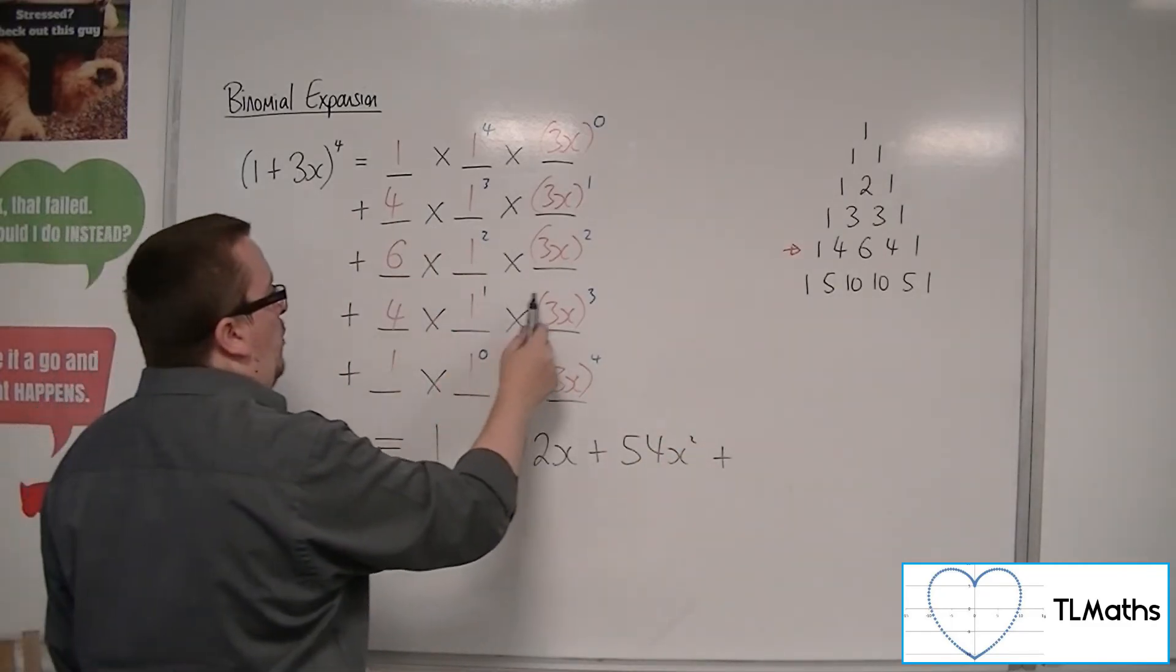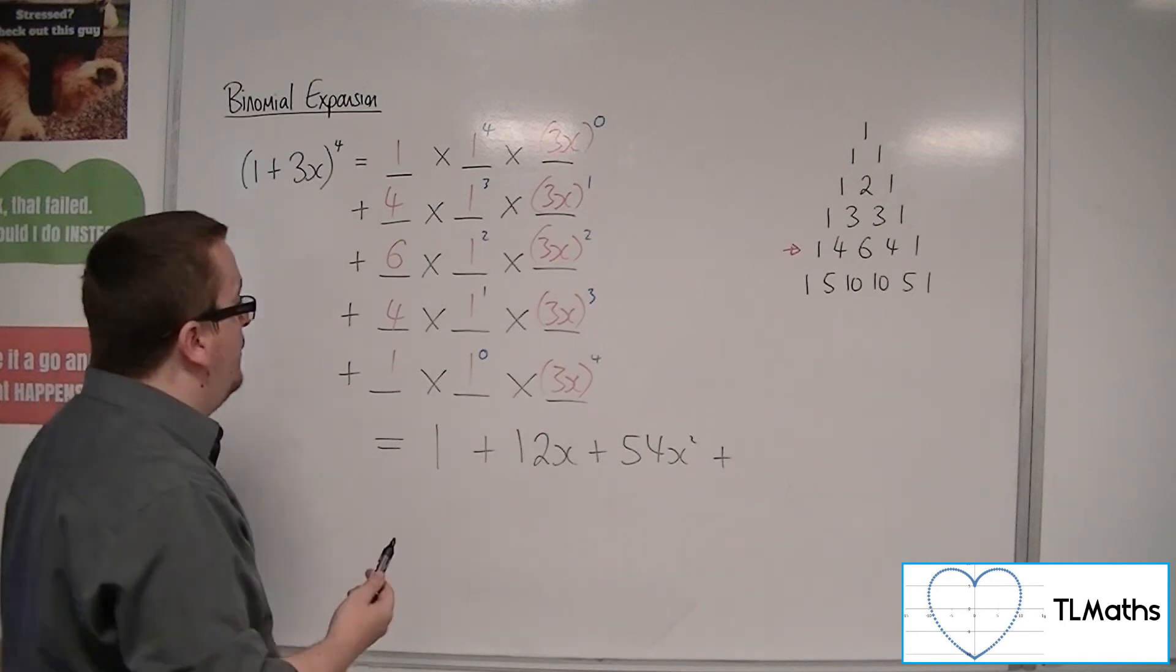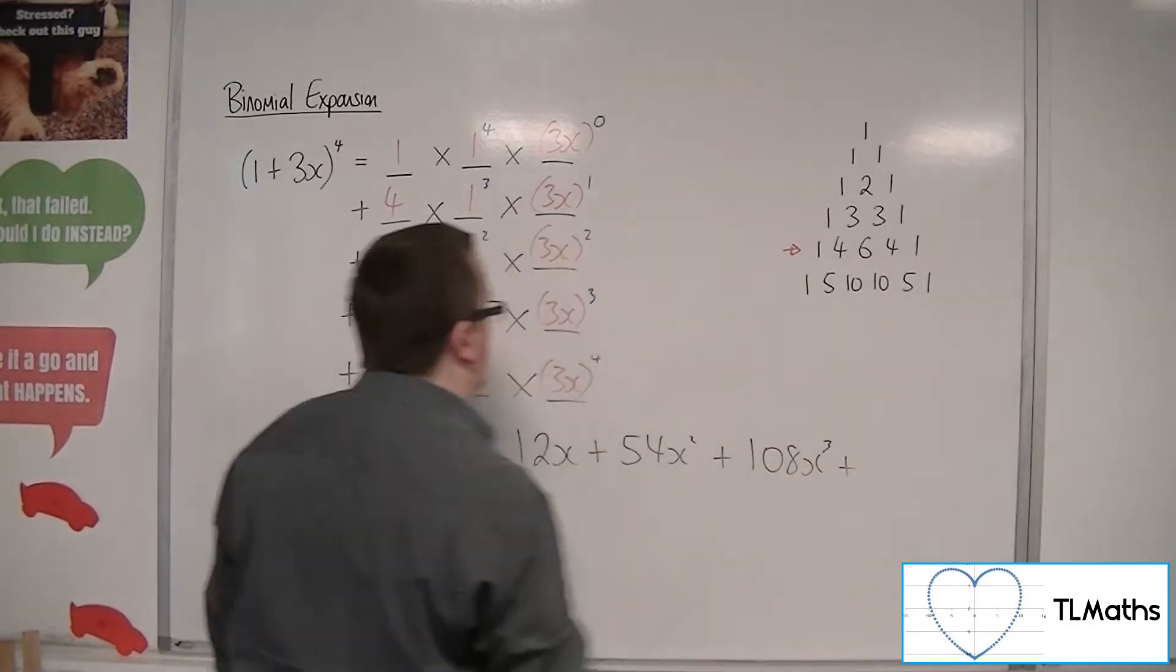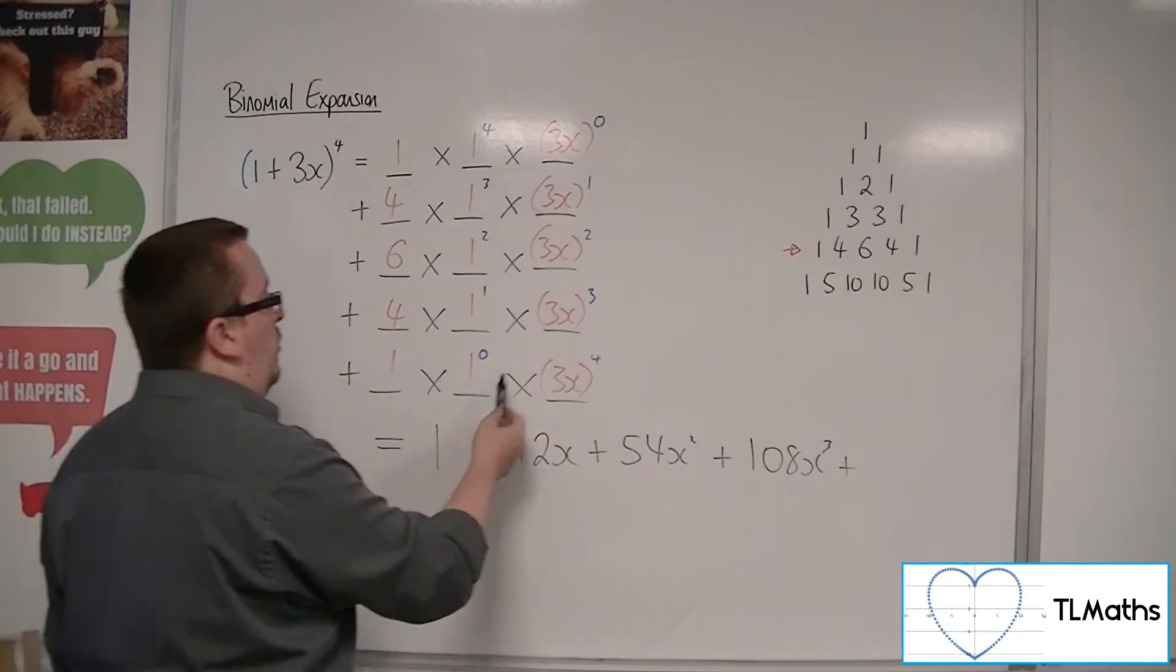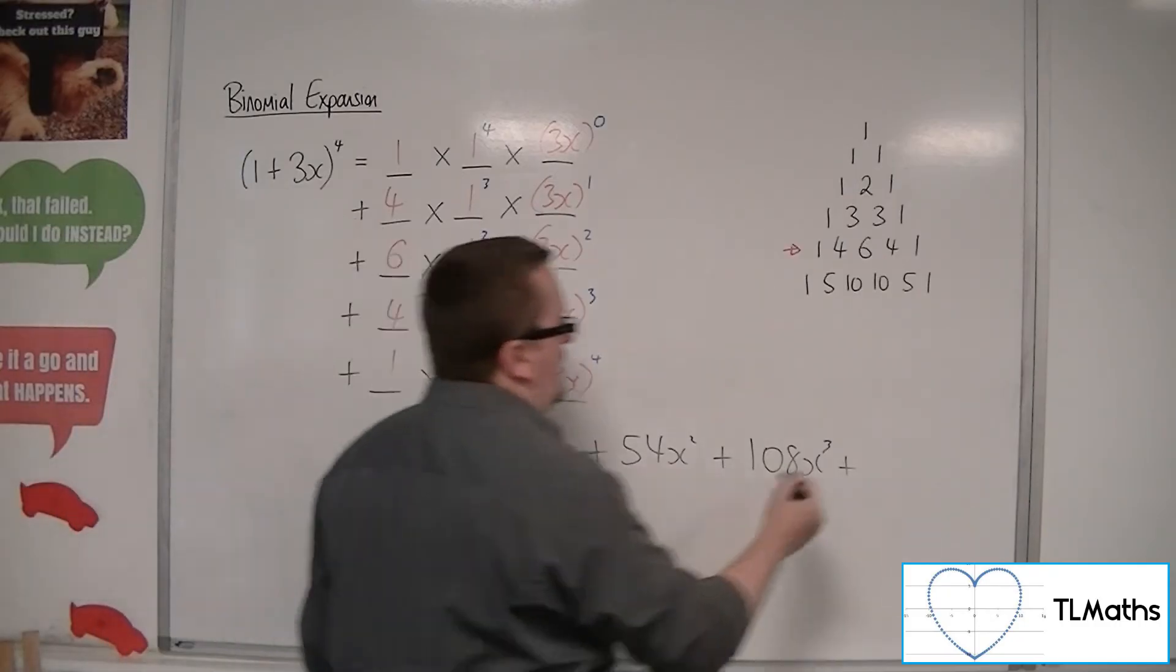Then you've got 4 × 1 × 3^3. 3^3 is 27, so that would be 108x^3. And then finally, 1 × 1 × 3^4, which is 81, so 81x^4.